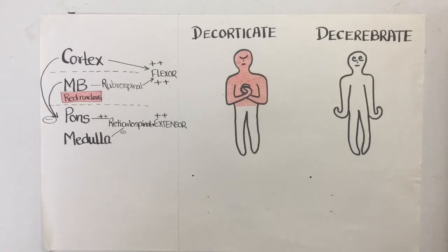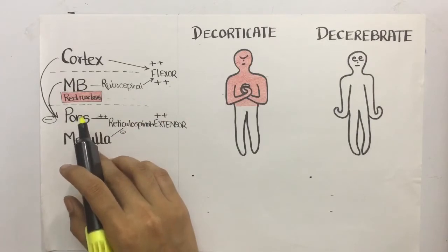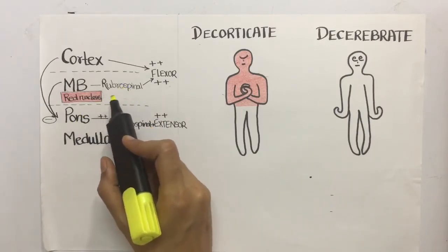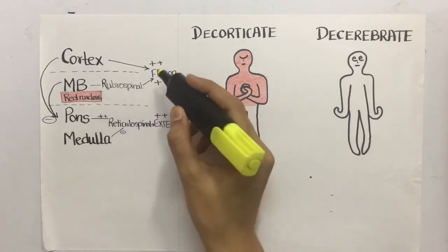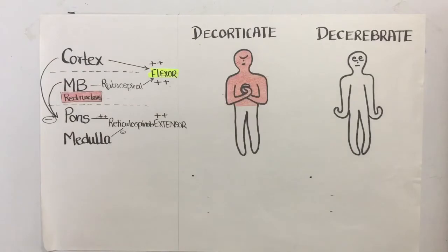First, let's briefly discuss the nerve supply to the flexors and the extensors. So there is the cortex, in the midbrain we have the red nucleus, so the fibers from the cortex and the red nucleus, the rubrospinal fibers, these supply the flexor group of muscles and they are excitatory to the flexor muscles.